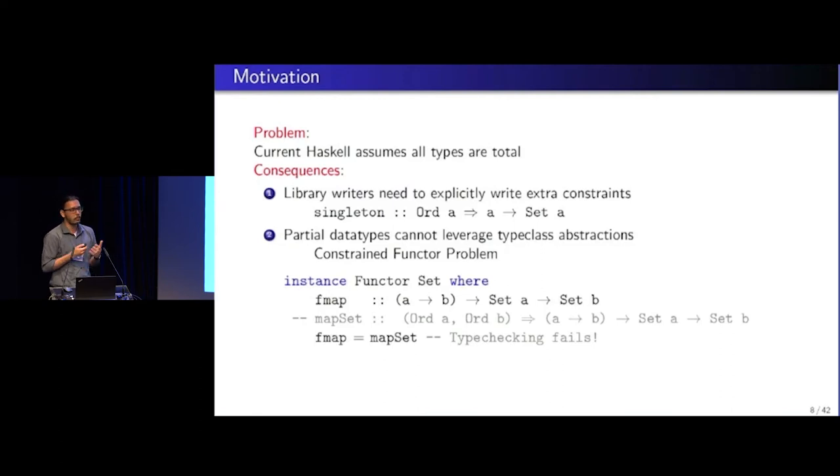The other one is that we cannot even leverage the existing type class mechanisms that we have in Haskell. Like we want to have set as a functor instance, but we cannot because as soon as you try to write a map set function, there will be extra constraints in the type signature. So it seems to be a bit of a problem.